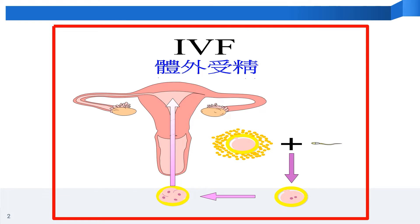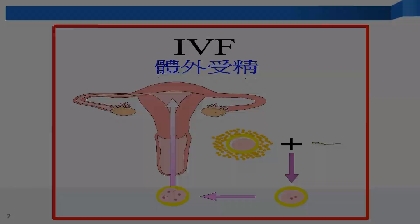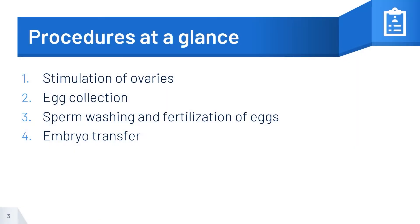IVF refers to the medical procedure where the egg is fertilized by sperm outside the body, forming embryos, followed by transfer of the embryo back into the womb. The procedures in IVF include several steps: stimulation of ovaries, egg collection, sperm washing and fertilization of eggs, and embryo transfer.